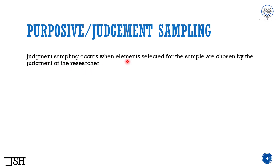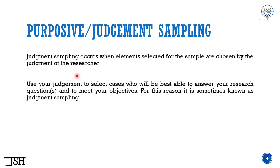Judgment sampling occurs when elements or cases selected for the sample are chosen by the judgment of the researcher. Here, the researcher uses their own judgment and thinking in selecting each of the cases for the sample. We use our own judgment to select cases — specifically, we use our judgment to select cases who will be best able to answer our research questions and meet our objectives. That is the reason we call it judgment sampling.